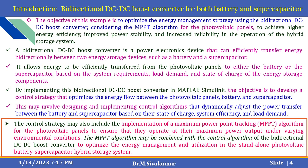Now, the optimized bi-directional DC-DC boost converter for both battery and capacitor. This example uses the bi-directional DC-DC converter along with the MPPT algorithm for the photovoltaic panel to achieve higher energy efficiency, improved power stability and increased reliability in the operation of hybrid energy storage systems. The bi-directional DC-DC boost converter is a power electronic device that can efficiently transfer energy bi-directionally between two energy storage devices such as battery and supercapacitors. It allows energy to efficiently transfer from the photovoltaic panel to either the battery or the supercapacitors based on system requirements, load demand and state of charge.